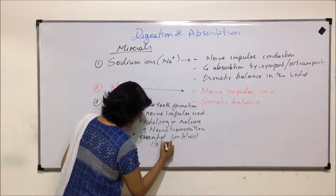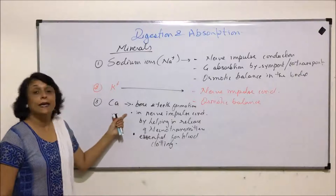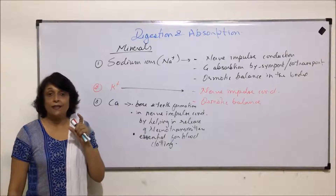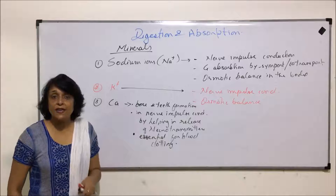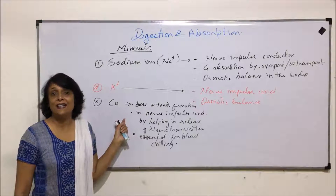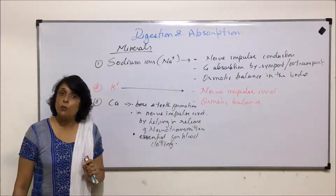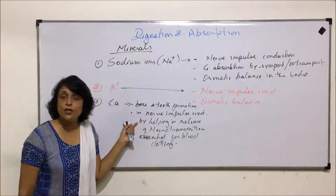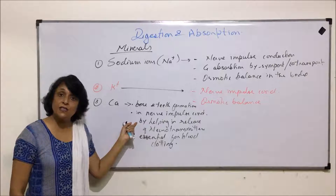Calcium is also essential for blood clotting as it is one of the clotting factors. Calcium is also essential for the process of capacitation in sperm — the acrosome membrane becomes weaker when calcium ions are absorbed, and that is when the acrosome ruptures releasing sperm lysins.